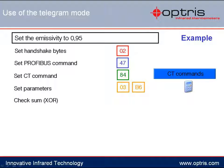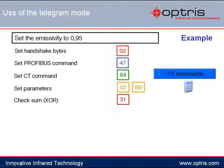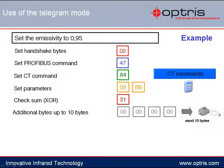In our case, the checksum is 84 XOR 03 XOR B6. Using the Windows calculator, 84 XOR 03 XOR B6 results in the byte 31. The remaining bytes needed to complete the 10 bytes for sending the telegram will be filled with zeros — 4 bytes in our case. The completed telegram can now be sent.